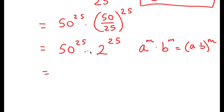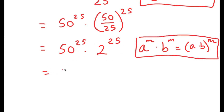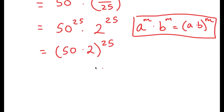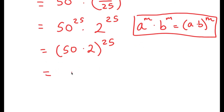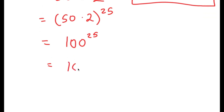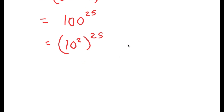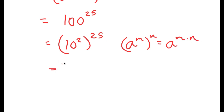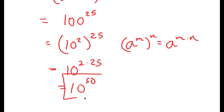So in this case, I have 50 to the power of 25 times 2 to the power of 25, and this can be written as 50 times 2, to the power of 25. Now 50 times 2 is 100, so I get 100 to the power of 25. However, I'm not done yet — I'm going to simplify this a little more. 100 I can rewrite as 10 squared, so I get 10 squared to the power of 25. And if I have a to the power of m to the power of n, this equals a to the power of m times n. So 10 to the power of 2 to the power of 25 equals 10 to the power of 2 times 25, which equals 10 to the power of 50. So 10 to the power of 50 is my answer.